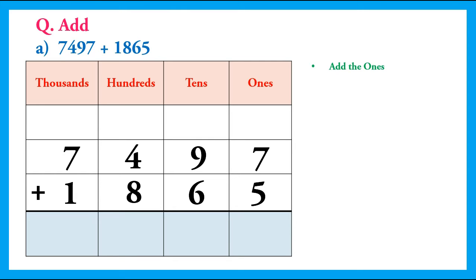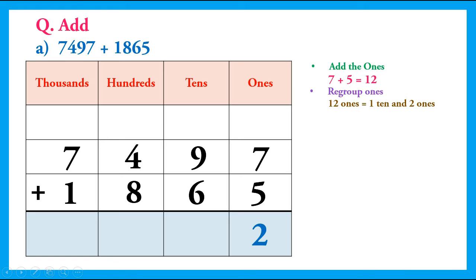We will start from adding the ones. 7 plus 5 equals 12, so we will regroup the ones. 12 ones is equal to 1 ten and 2 ones. We will write 2 in the ones column and carry 1 to the tens column.